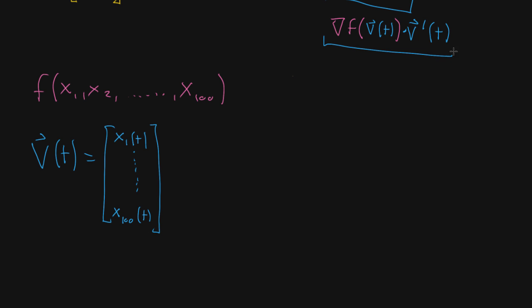This expression still makes sense, right? You can still take the gradient of f, it's going to have 100 components. You can plug in any vector, any set of 100 different numbers, and in particular, the output of a vector-valued function with 100 different components is going to work. And then you take the dot product with the derivative of this. And that's the more general version of the multivariable chain rule.